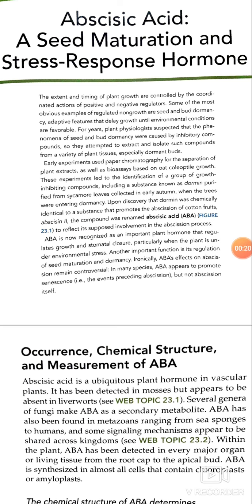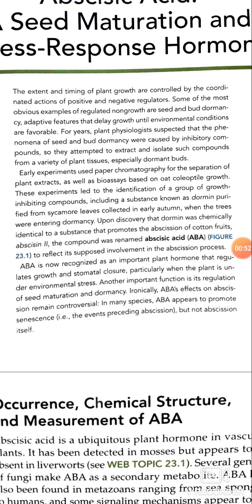The extent and timing of plant growth are controlled by the coordinated actions of positive and negative regulators. Some of the most obvious examples of regulated non-growth are seed and bud dormancy, adaptive features that delay growth until environmental conditions are favorable.